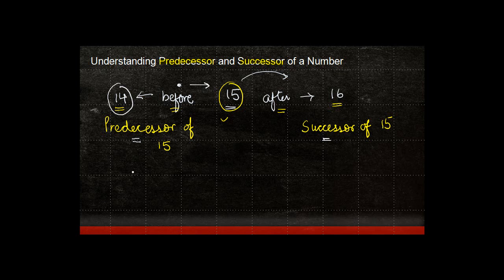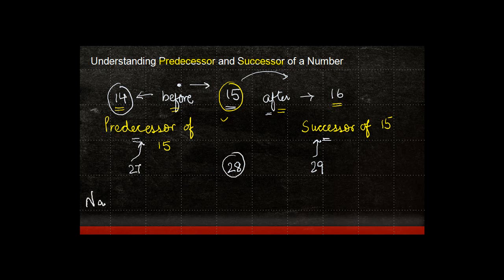This applies to all natural numbers except one. Let me give you an example with 28. The number which comes after 28 is 29, so 29 is known as the successor of 28. The number which comes before 28 is 27, and 27 is called the predecessor of 28.